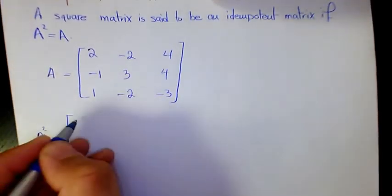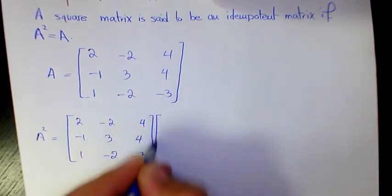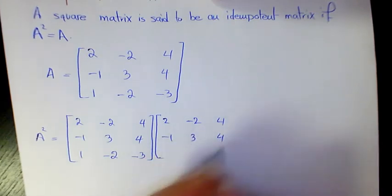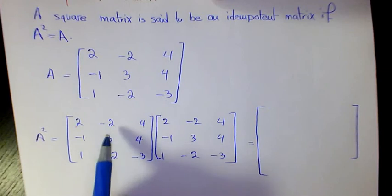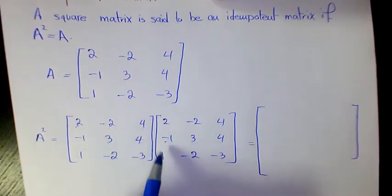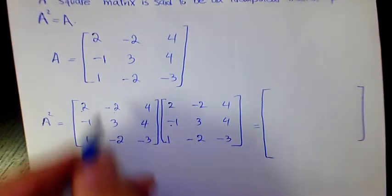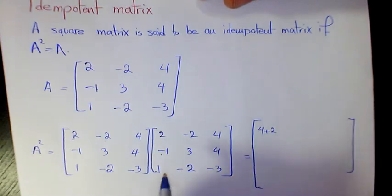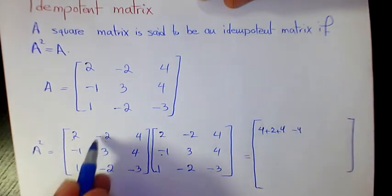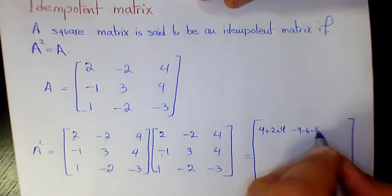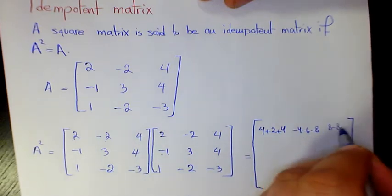So we're going to find out A squared, which is A times A: two, negative two, four, negative one, three, four, one, negative two, negative three — multiplied by itself. That's going to be two times two plus negative two times negative one plus four times one, which gives us four plus two plus four. The next element: this row multiplied by this column gives negative four, negative six, and negative eight.